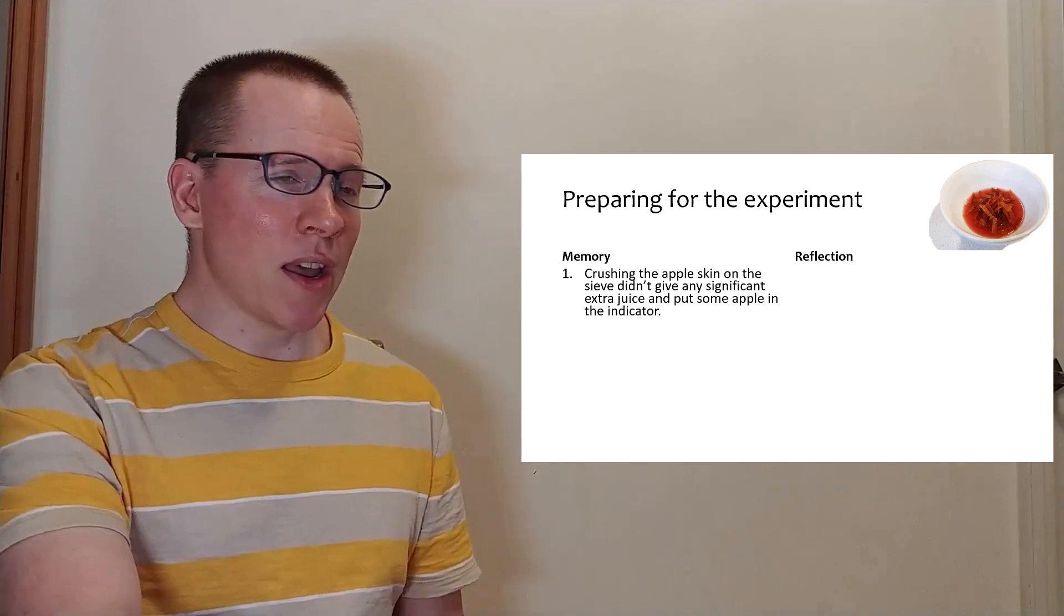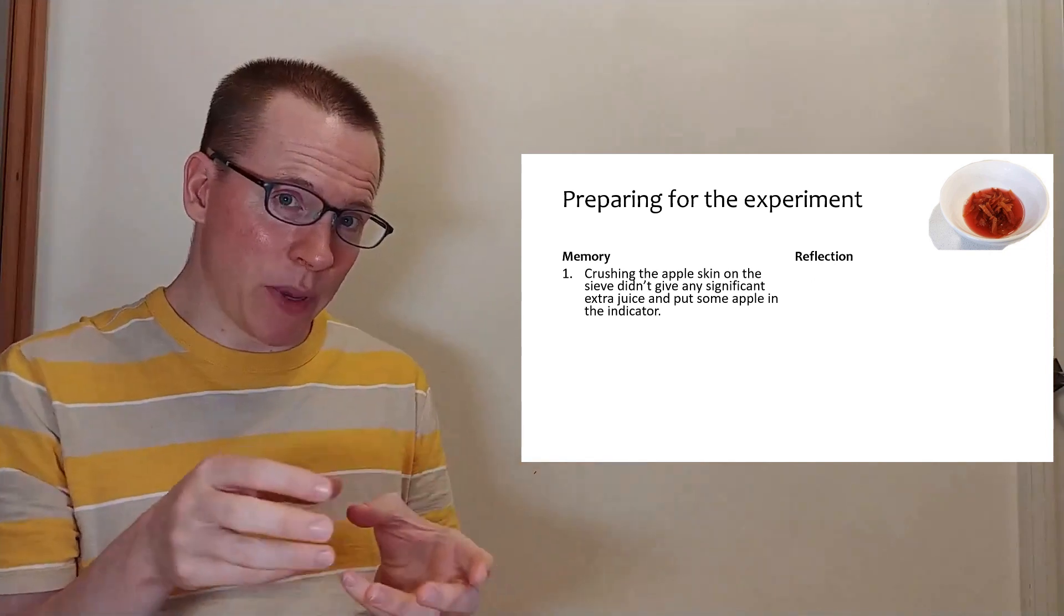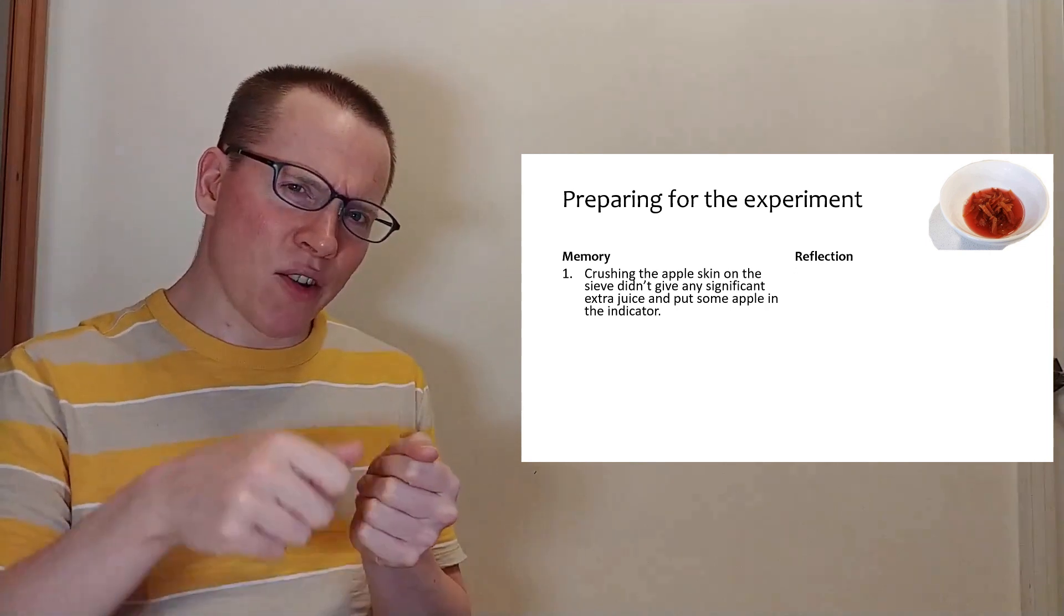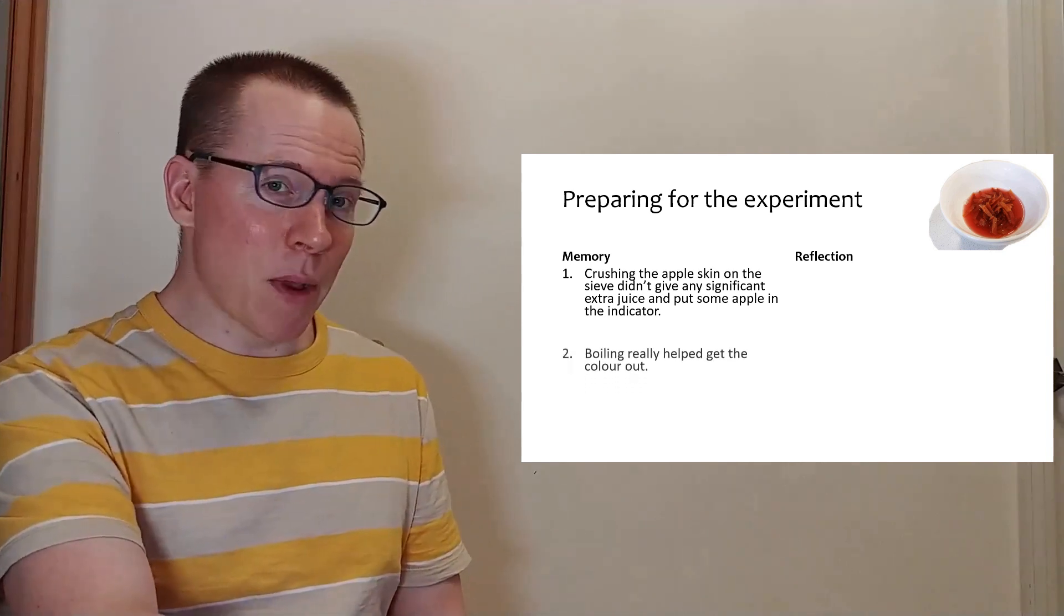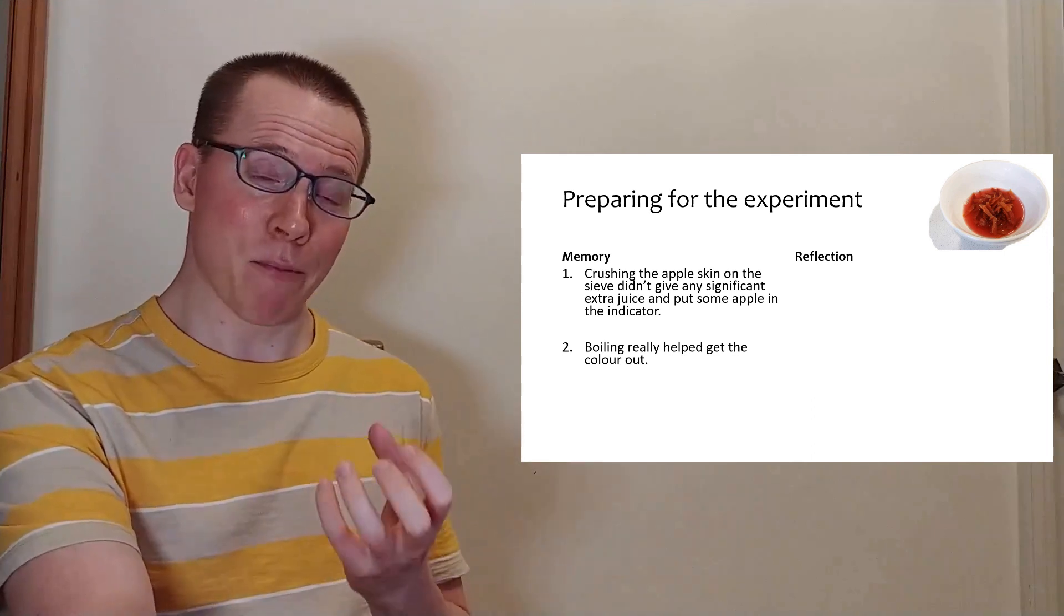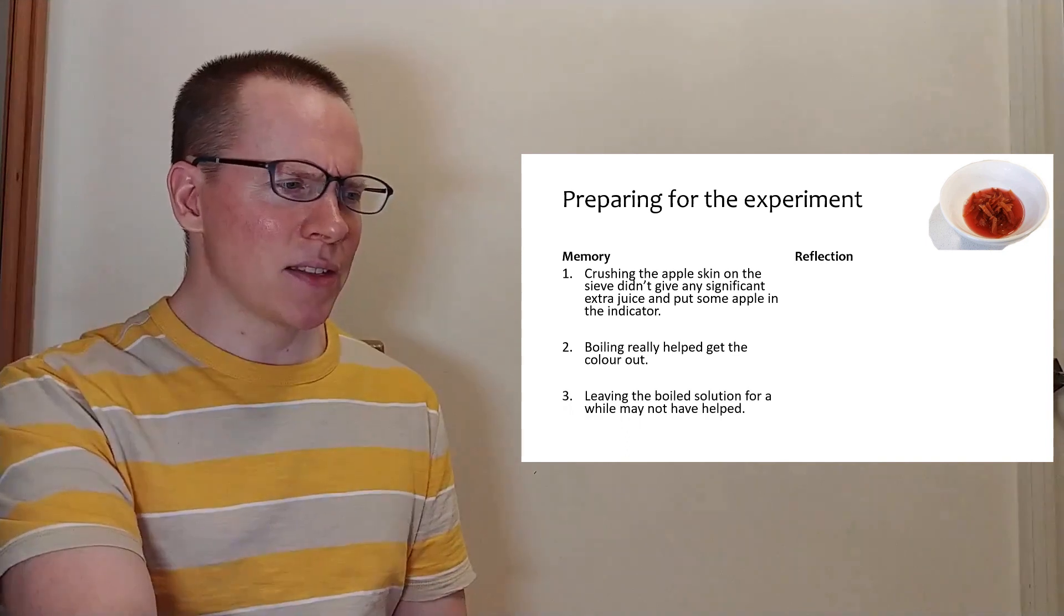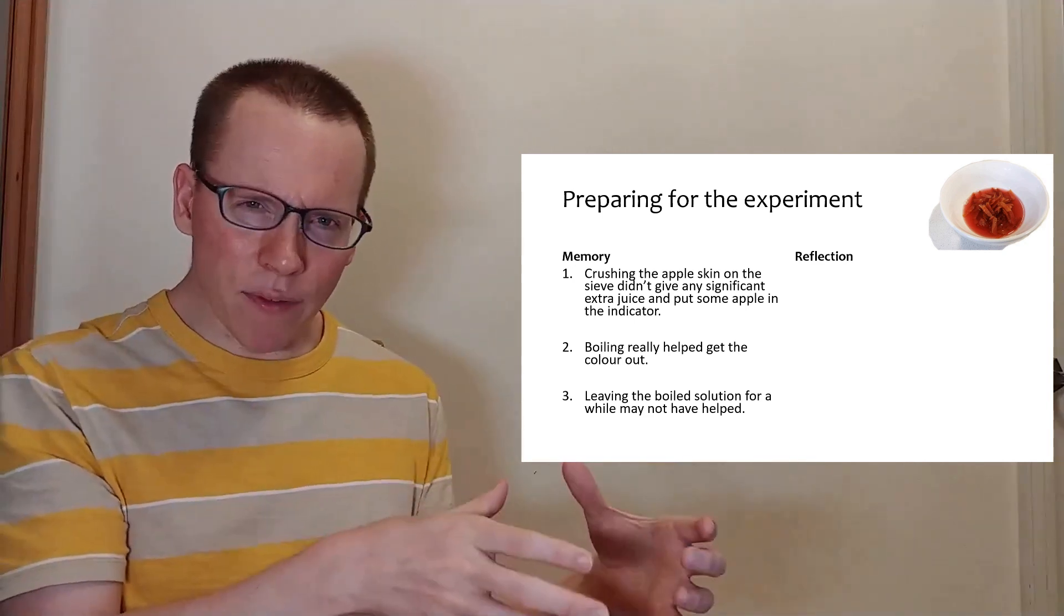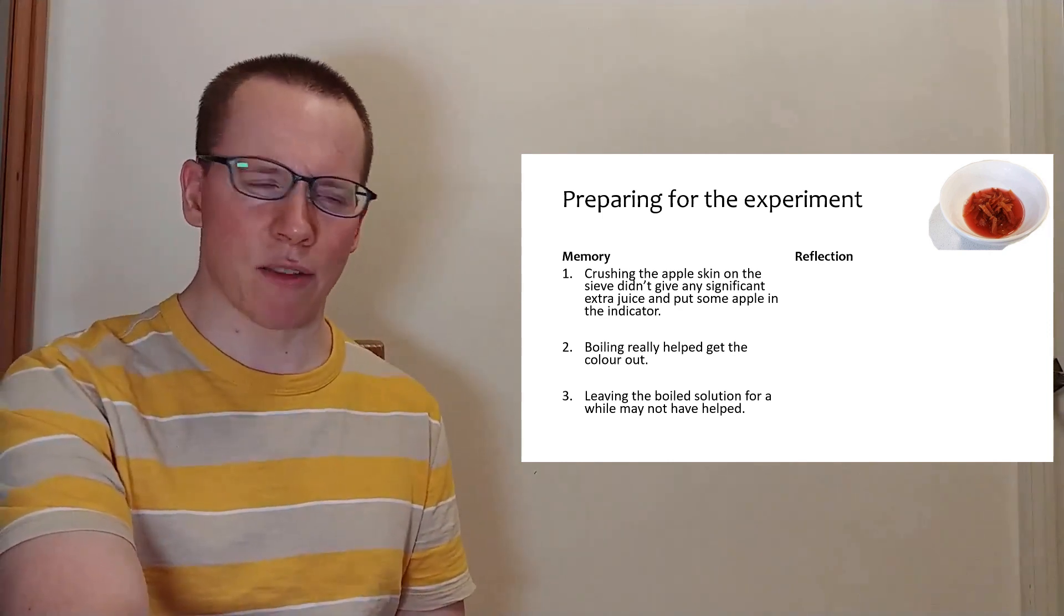Another memory is that when I had finished preparing the indicator, it was all mixed in with the little pieces of apple. So I put it into a sieve and then I thought, oh, I'll crush it to squeeze out any more of the juice. Another memory I recall is that boiling really helped. I could see that the more I boiled it, the color was really coming out, the pigment. And my third memory is that I'm not sure if leaving it for a while after I boiled it, I'm not sure if that really helped. So I want to think about these three things.